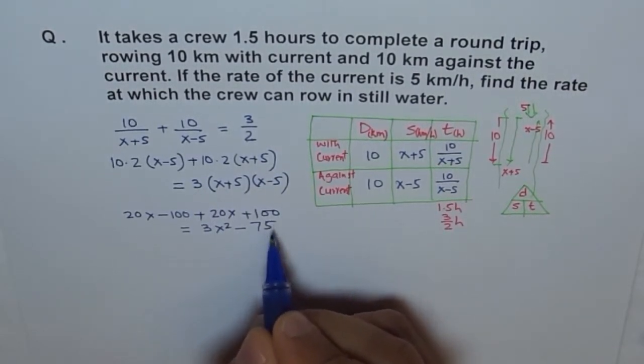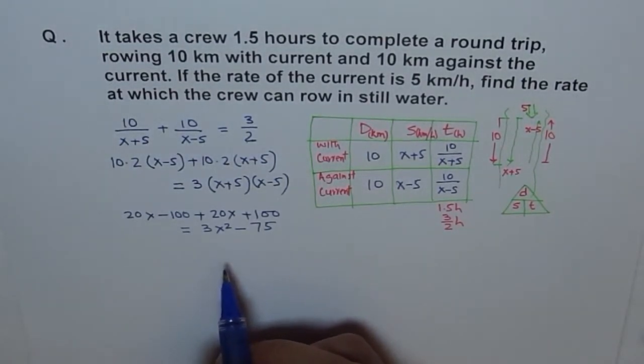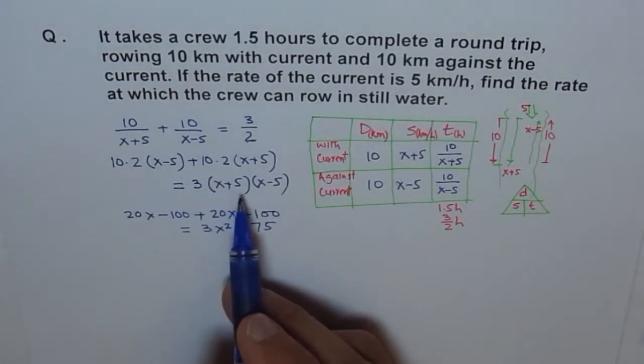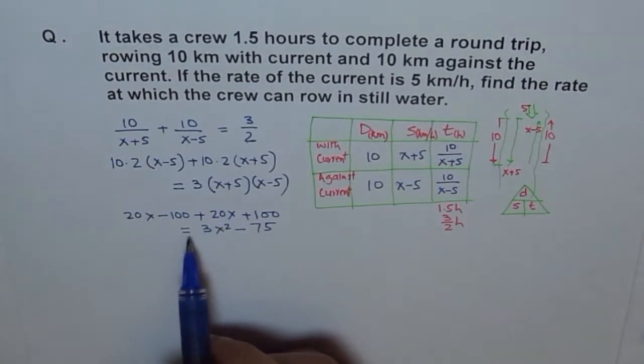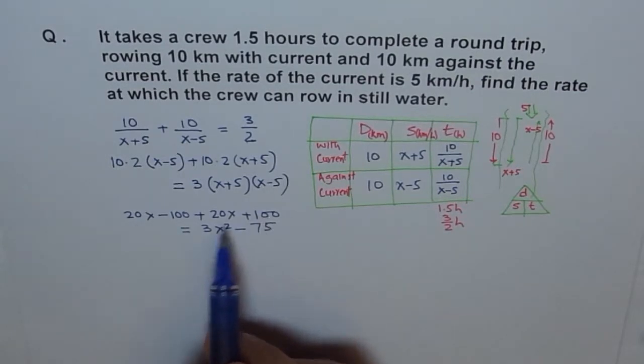As you can see, I'm missing many steps purposely. Because I know you can do them, right? So, try to do these steps yourself. Now, here again, minus 100 plus 100 will become 0. 20X plus 20X is 40X. Correct?